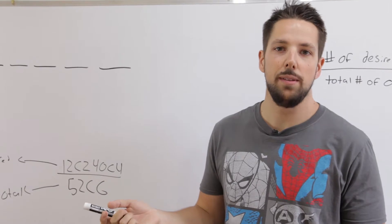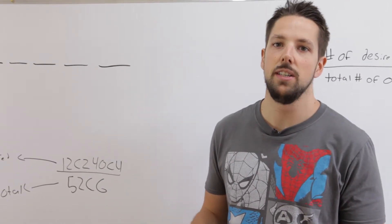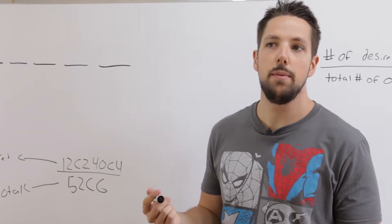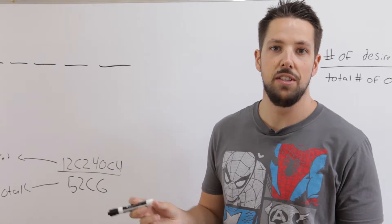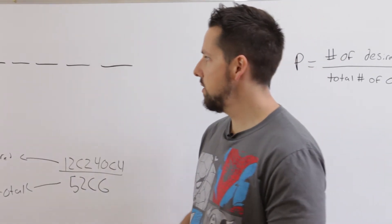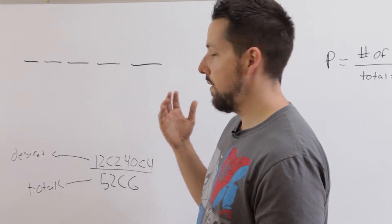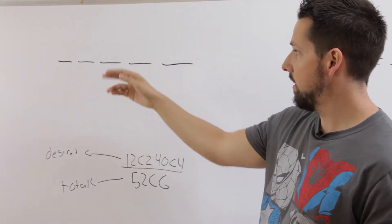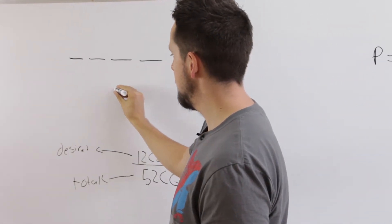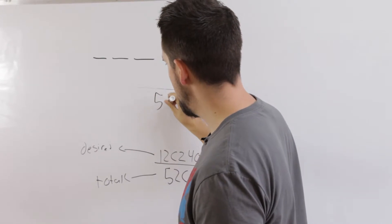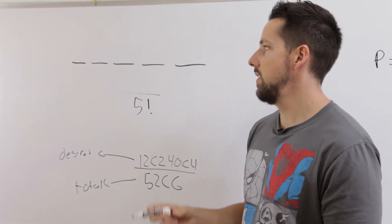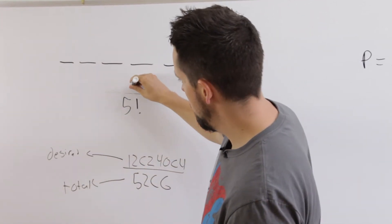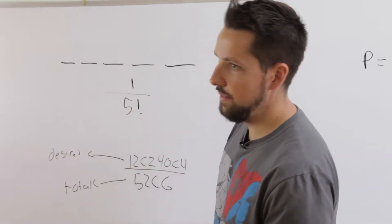We can also use probability with all the organized counting techniques we learned in the previous unit. For example, what's the probability of five people in a photograph standing in order of descending height? Probability is always the number of desired outcomes over the total number of outcomes. If five people are standing in a row, the total number of ways they can stand is five factorial. That can only happen one way, so the probability is one over five factorial.